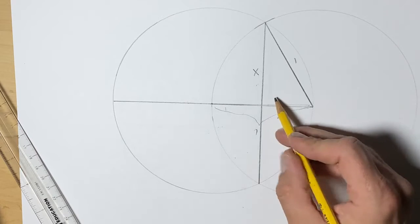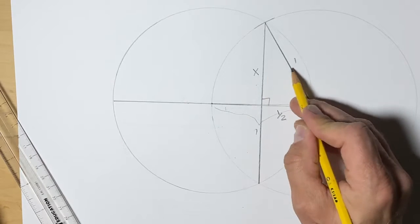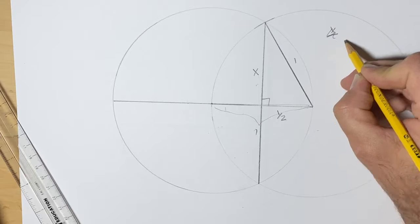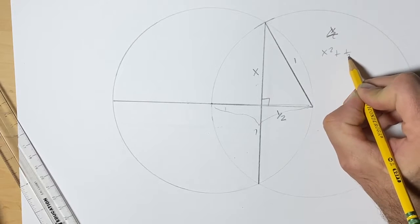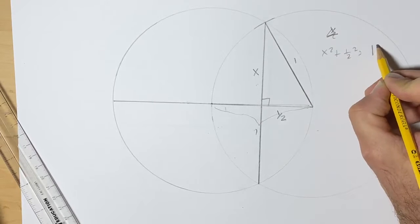So let's do the Pythagorean theorem. Here's our hypotenuse. x squared plus 1 half squared equals 1 squared.